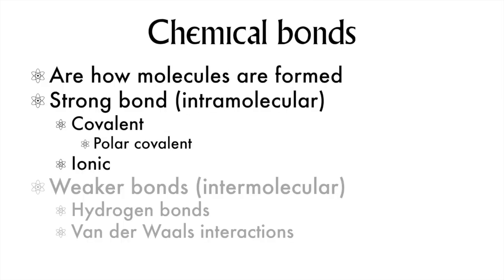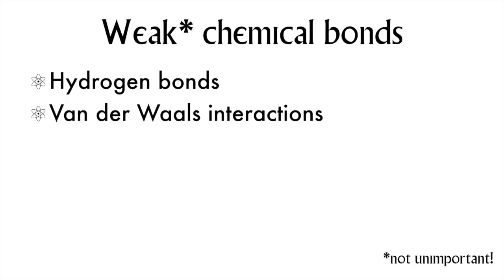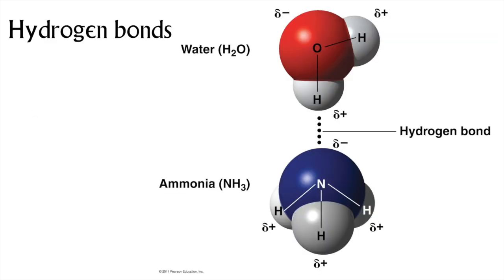Moving on to the intermolecular bonds — just because they are weaker does not mean they are unimportant. Remember those polar covalent bonds with their partial charges? Because atoms are not so great at sharing, there are consequences. Those partial positive and negative charges are attracted to each other as opposite charges do, leading to a transient stickiness between these molecules. Chapter three will take a deep dive on this.